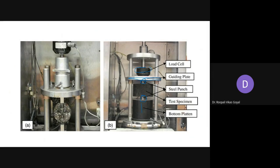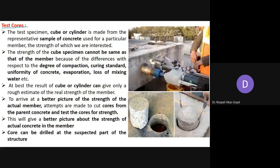An important concept is the test code. Generally, we use cube and cylinder specimens made from representative samples of concrete for a particular member. However, the strength of these specimens cannot be the same as that of the actual member, due to differences in degree of compaction, curing standards, uniformity of concrete, and evaporation loss of mixing water at the construction site compared to laboratory conditions.